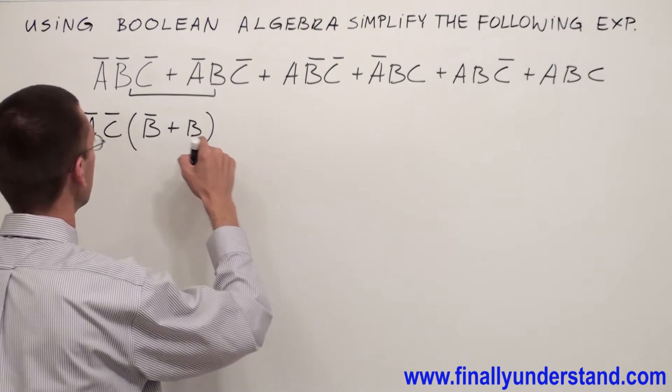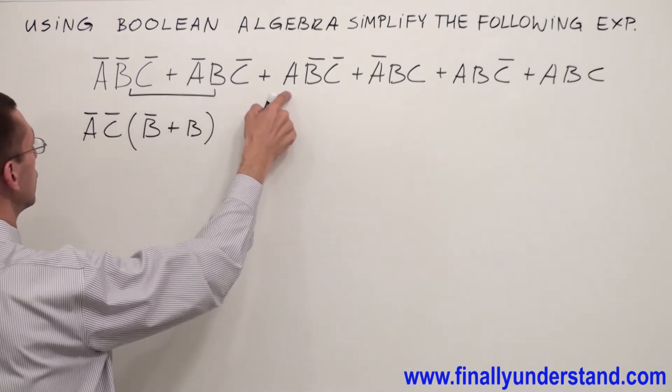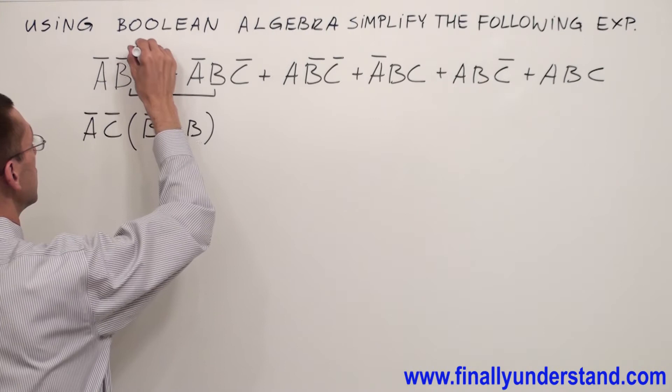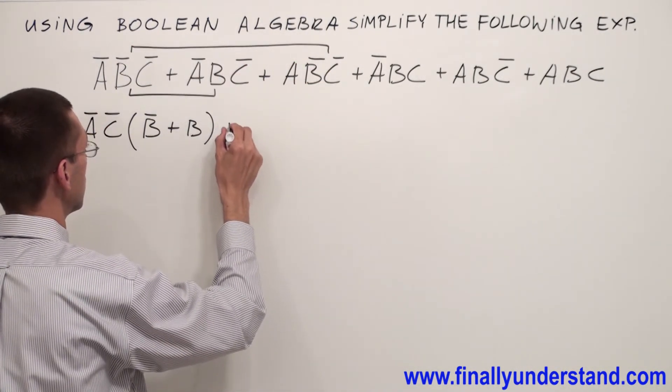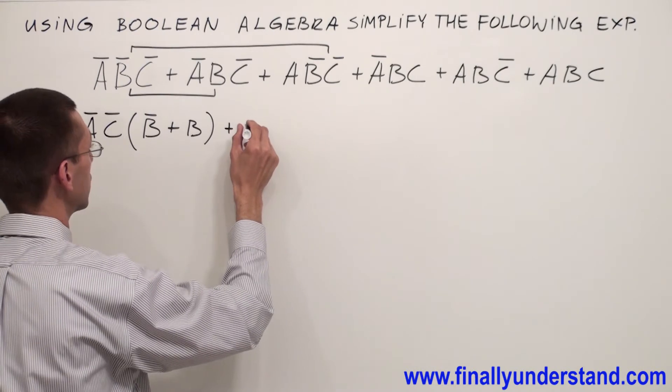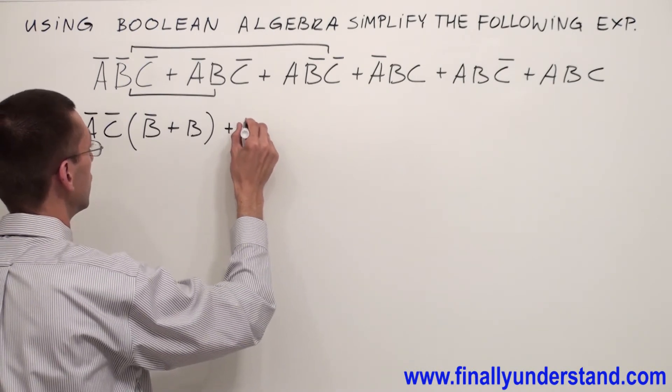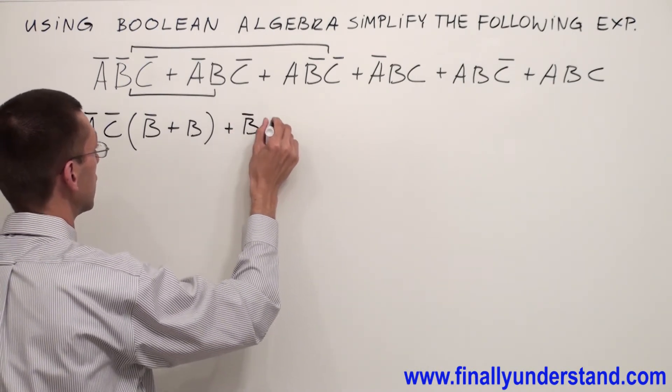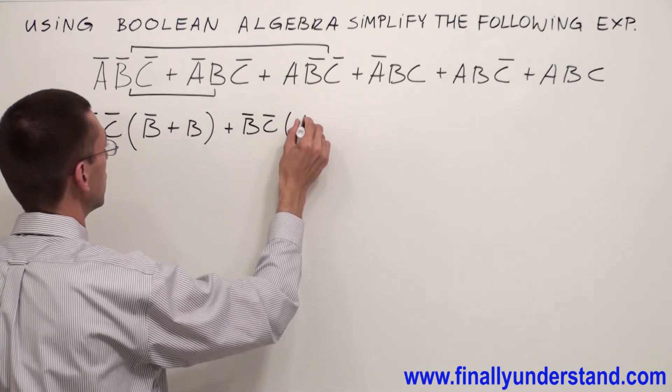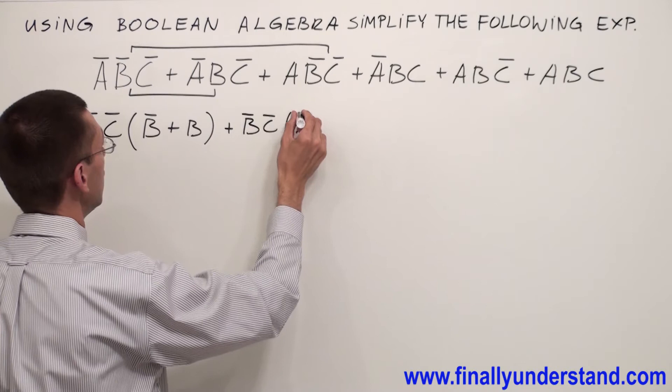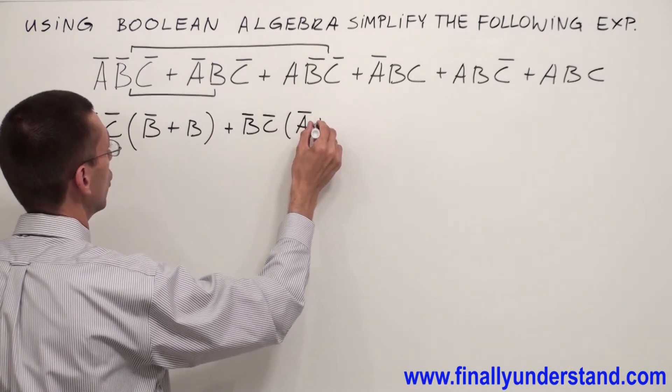Next, if you are going to look at the first term and the third one, you will see that they have B̅ and C̅ together, so I'm going to factorize both variables B̅ and C̅ from these two terms and inside of the parenthesis I'm going to have A̅ or A.